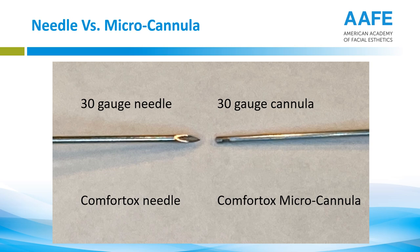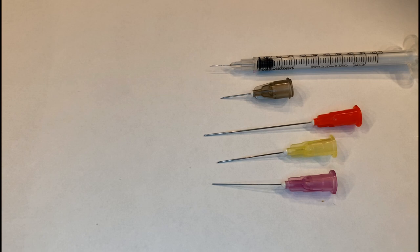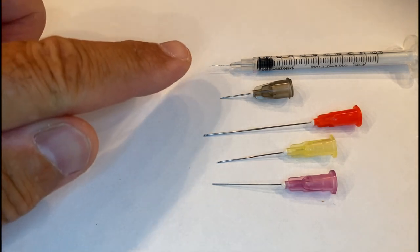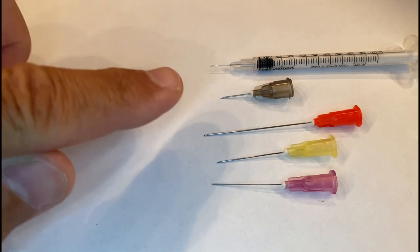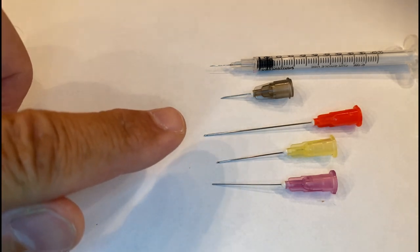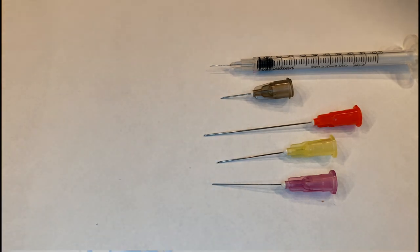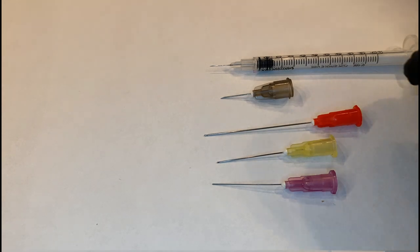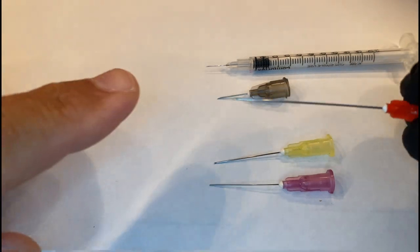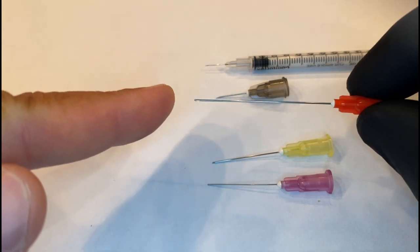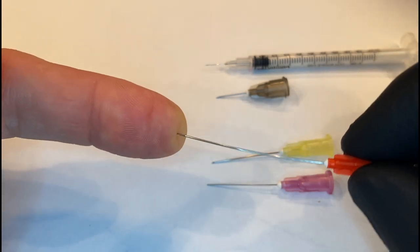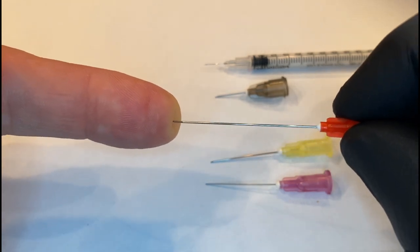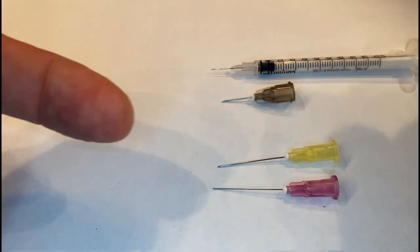Let's test whether that 30 gauge micro cannula is as sharp as a needle — if it is, it should act like a needle. Here we have a Comfort Tox syringe with a 31 gauge needle, a 27 gauge needle used for Botox and filler, and Comfort Tox micro cannulas in 25, 27, and 30 gauge. Let's start with the 25 gauge Comfort Tox micro cannula. I'm going to sacrifice my finger for the betterment of society — pushing fairly hard, indenting the skin, and it is definitely not going through.